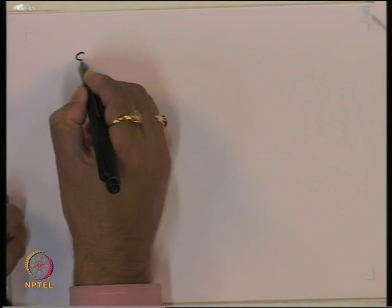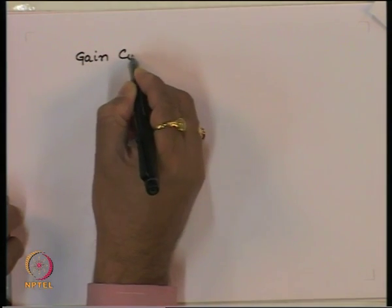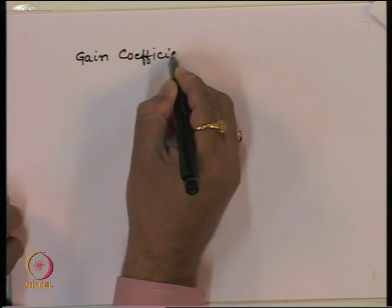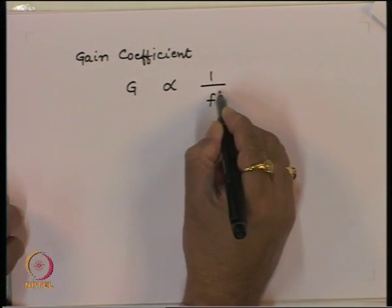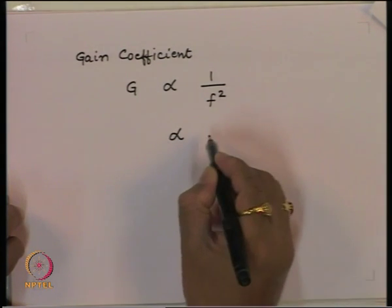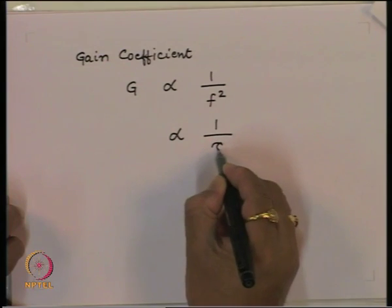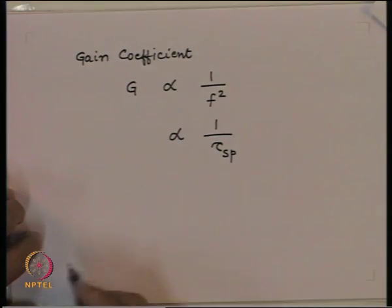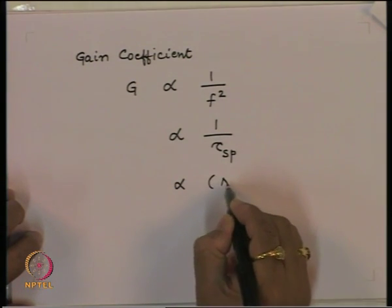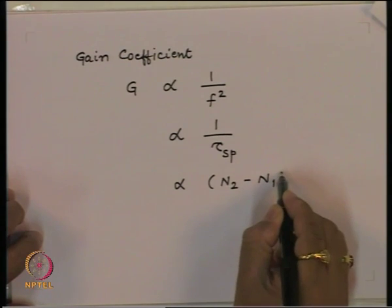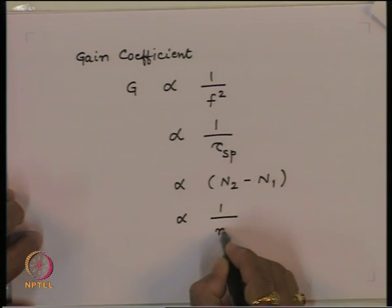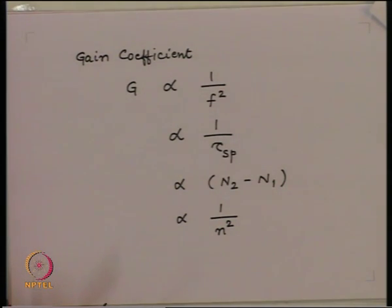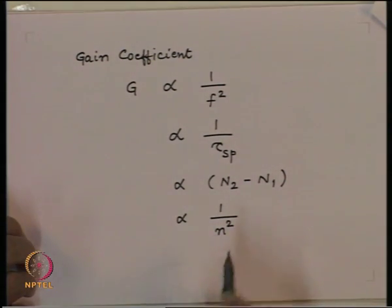If we write the gain coefficient G explicitly: it is proportional to 1 over f squared, proportional to 1 over tau_sp, proportional to the population inversion N2 minus N1, and proportional to 1 over n squared — where n is the refractive index. Since the refractive index squared is the dielectric constant of the medium, the gain is inversely proportional to the dielectric constant of the medium.